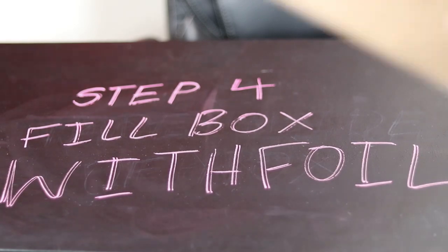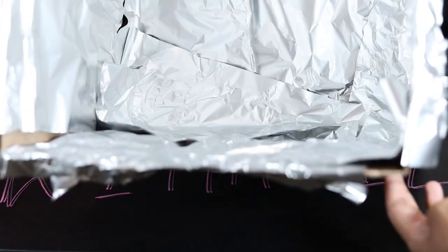Step four is to take the aluminum foil and pretty much just place it all around the box and make sure you cover the entire surface area of the box just to make sure that there's maximum reflection.